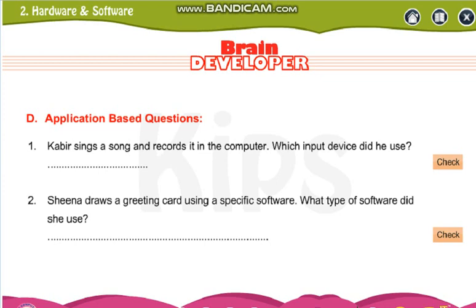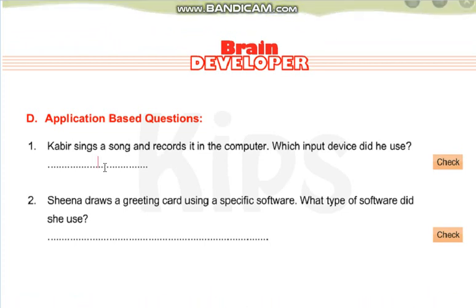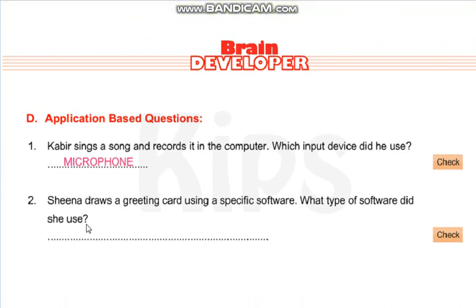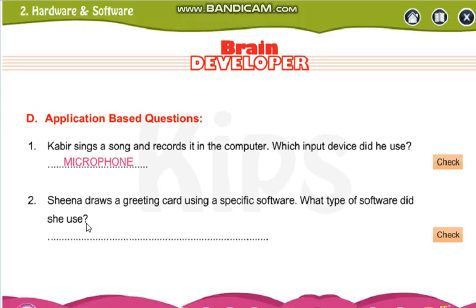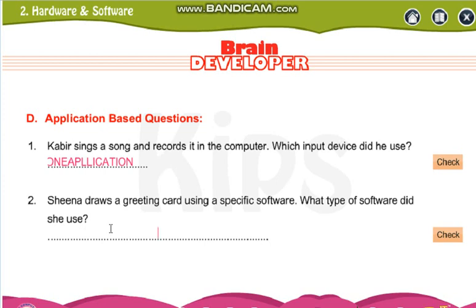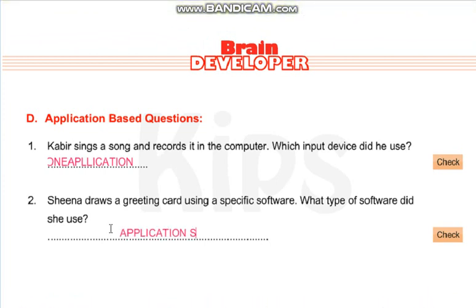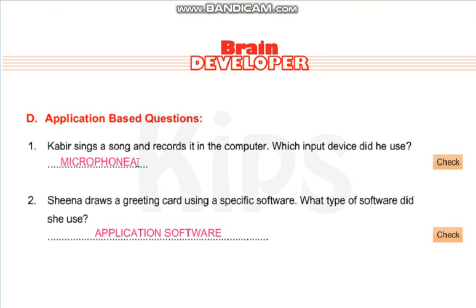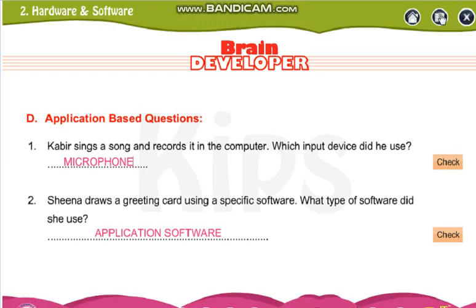Now application-based questions. Kabir sings a song and records it on the computer — which input device did he use? It's microphone. Sheena draws a greeting card using a specific software — what type of software did she use? Application software. See the spelling and then write: microphone and application software.